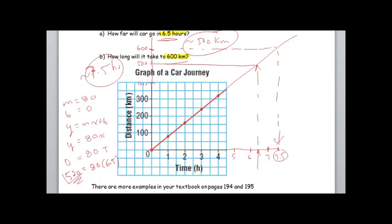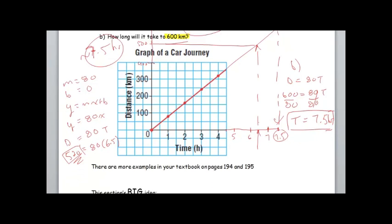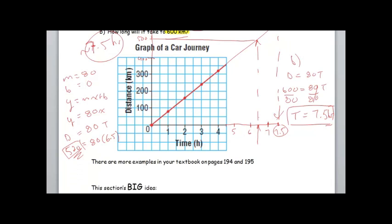And then in part b, if we're asked how long will it take to go 600 kilometers, again we can start with our equation. If our distance is 600 kilometers we can find out what that time is by dividing by 80 on both sides. 600 divided by 80 is going to be 7.5 hours. So our estimate was bang on and I cheated a little bit because I didn't know where we were going to end up.